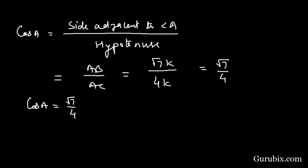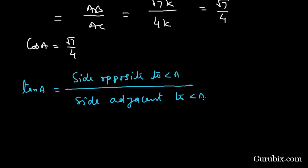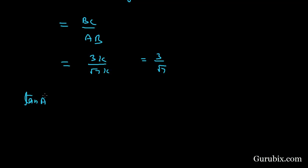And now we shall find tan A. Tan A will be equals to side opposite to angle A over side adjacent to angle A. So this is BC over AB. This means 3K over root 7K. Therefore tan A is equals to 3 over root 7.